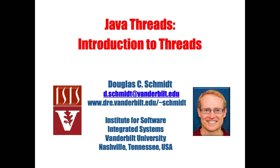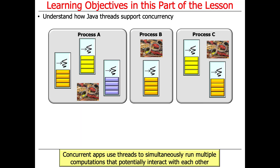Let's start our discussion of threads with an introduction to threading. Java concurrency is supported largely through threads. At some point there may be other mechanisms like coroutines, but they're not part of Java yet. Concurrent applications use threads to simultaneously run multiple computations that can potentially interact with each other. They don't have to interact — they may be embarrassingly parallel, meaning no dependencies on other threads — but for most concurrency discussions, threads will interact directly or indirectly through synchronizers and other means.